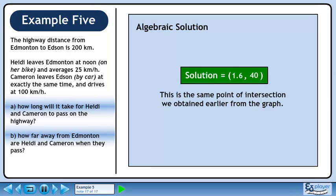We can represent our answer as the ordered pair 1.6, 40. This is the same point of intersection we obtained earlier from the graph.